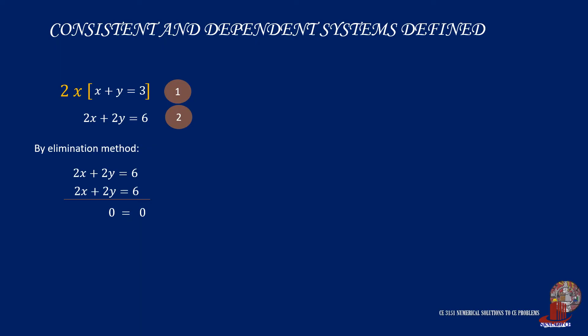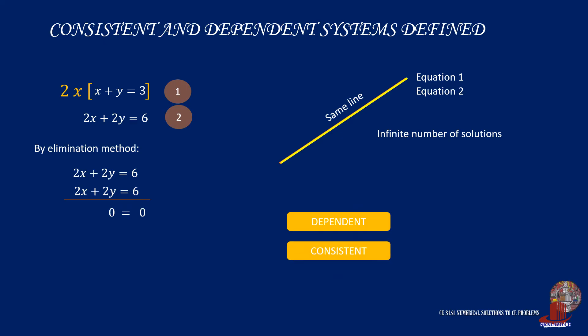If we illustrate the lines once more, we would notice that the first equation is the same with the second equation, as the second is just the multiple of the first. And so each point of the line will be the intersection, giving infinite number of solutions. This case is described as dependent but consistent.